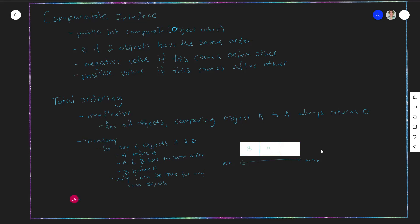The last piece of terminology is transitivity. Transitivity means that if A comes before B, and B comes before a third object C, then A comes before C as well. That basically falls in line with the line analogy — we have a minimum and maximum, and objects have to be placed somewhere on this line.